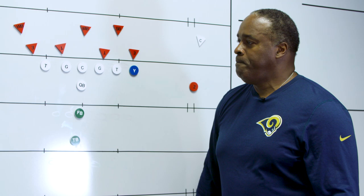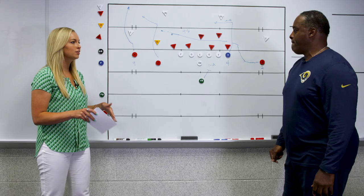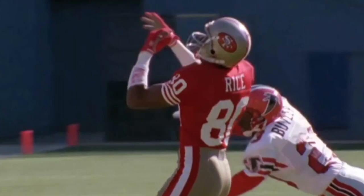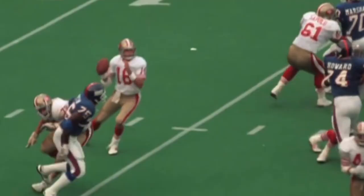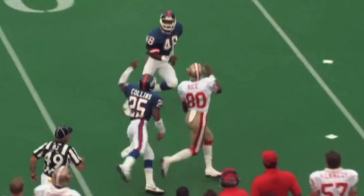Let's talk specifically about a route. I'm going to talk about the route that we ran in San Francisco — what we called it was 22ZN. On that particular route the receiver at that time was Jerry Rice, and basically what he had to do was read how the corner is playing it.